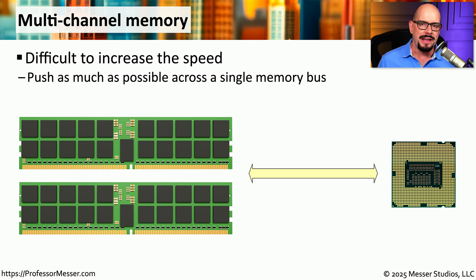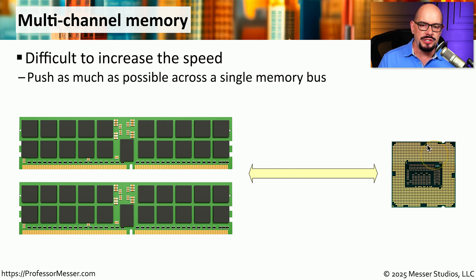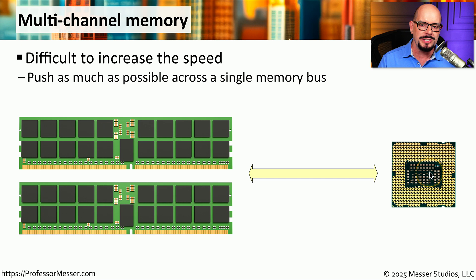One of the challenges with constantly increasing these speeds is that eventually we hit a maximum of what is physically possible. If you're moving information from memory into a CPU and then back to memory again, you may find that you max out the total throughput available over that pathway. The CPU has quite a bit of idle time while waiting for the transfer to occur, and the bandwidth between the two is not enough to support the overall speed of the CPU.